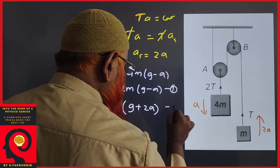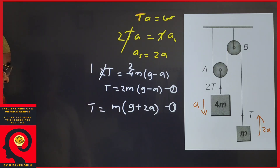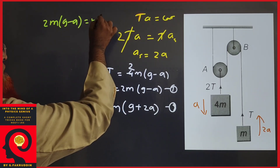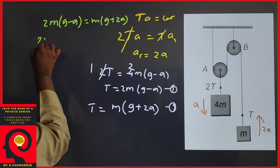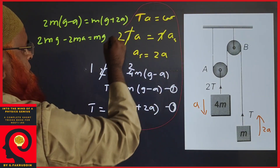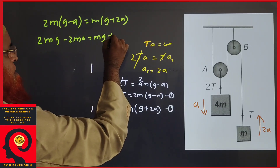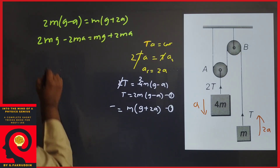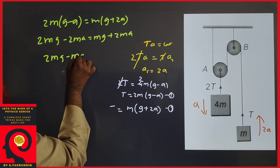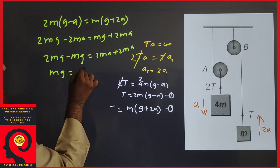Both expressions represent the same tension, so let us make them equal: 2m(g − a) = m(g + 2a). Expanding: 2mg − 2ma = mg + 2ma. Rearranging: 2mg − mg = 2ma + 2ma, giving mg = 4ma.